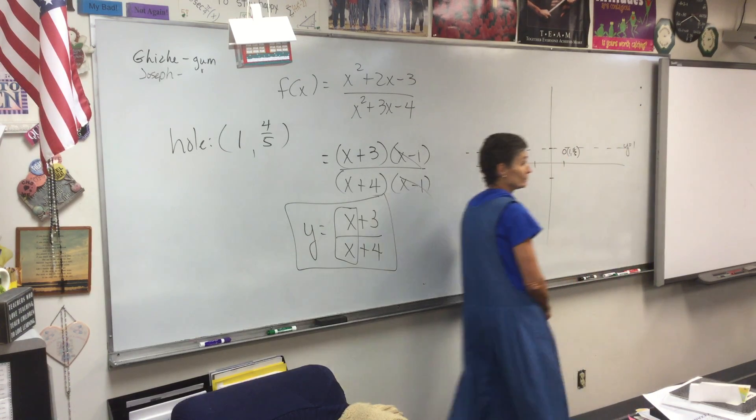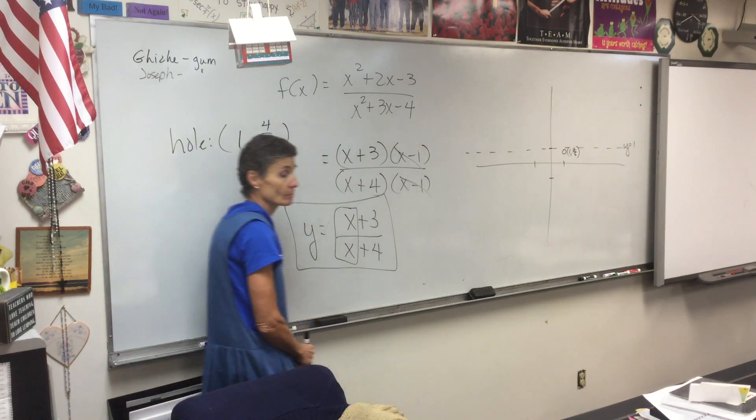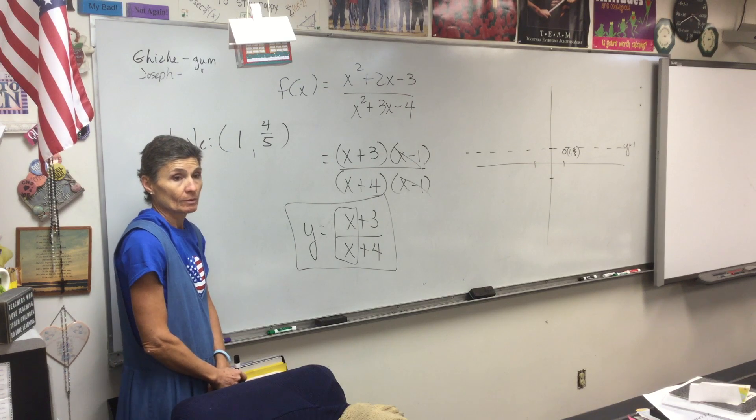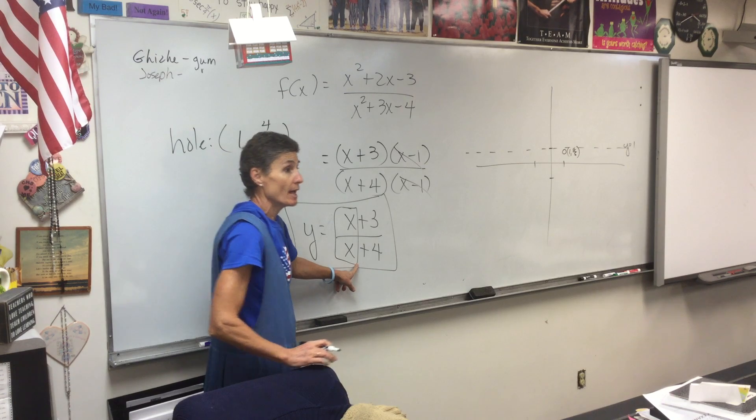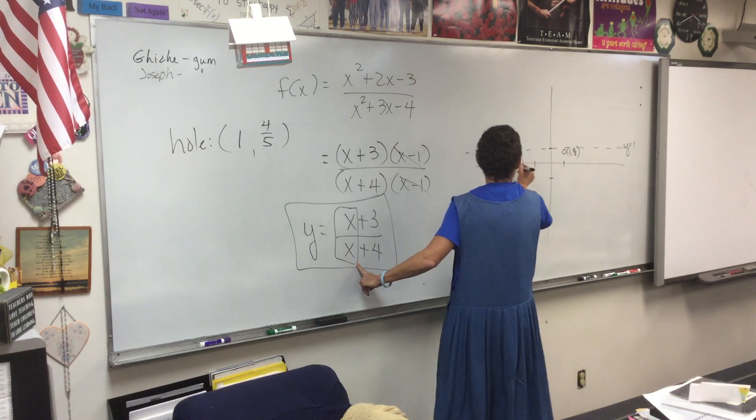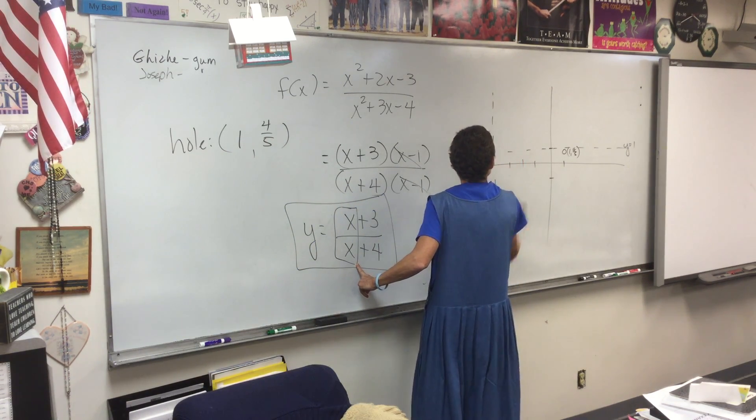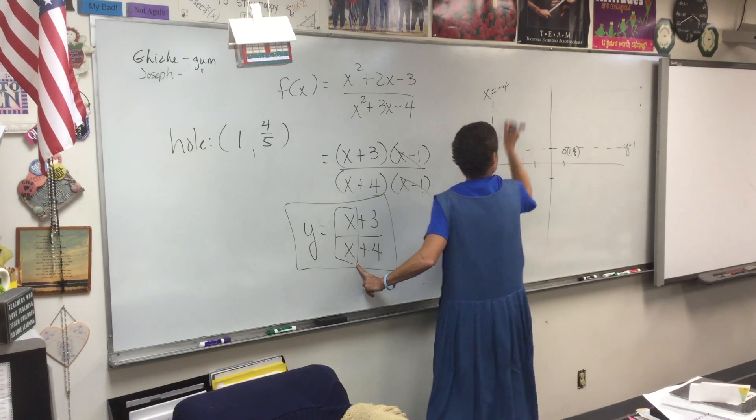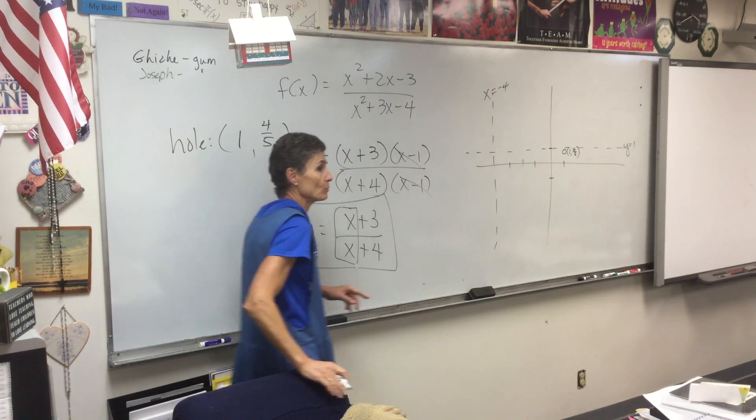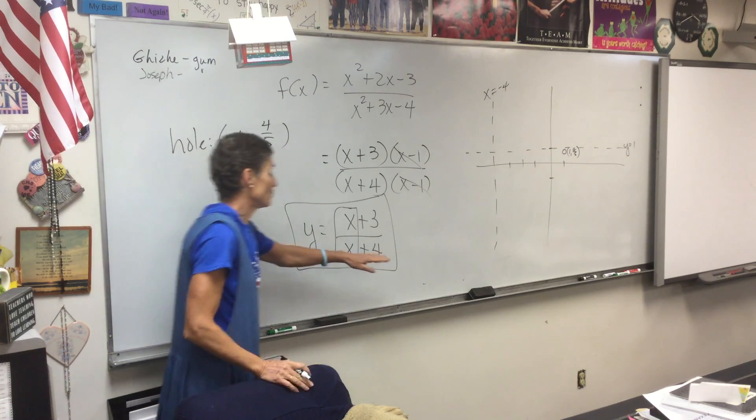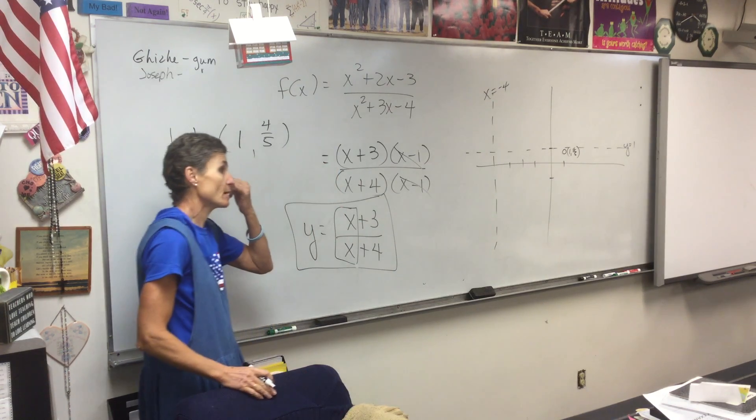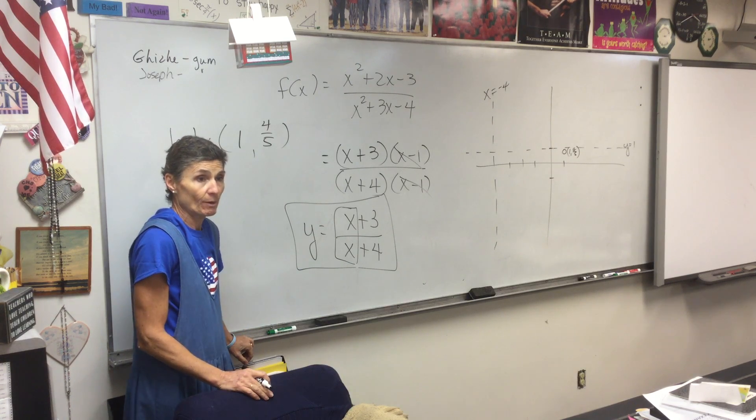One horizontal asymptote where? One. This gives me my horizontal asymptote. There's a horizontal asymptote at y equals one. Vertical asymptote at x equals negative four. Vertical asymptotes come where your denominator is zero.